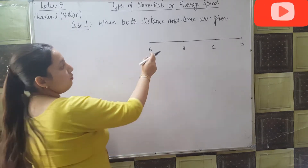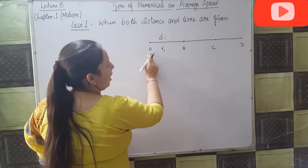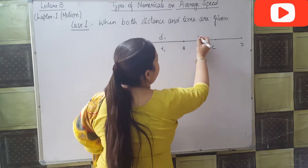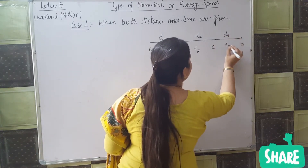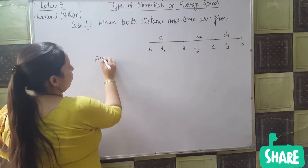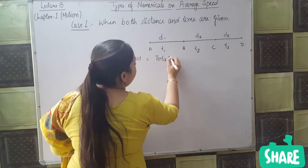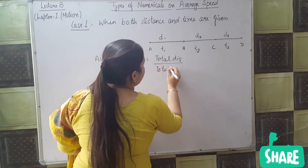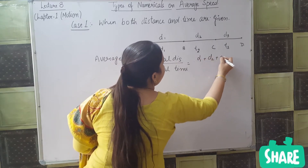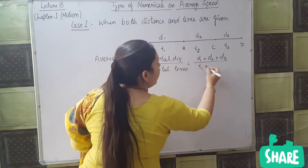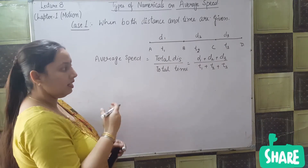Consider this example: if a body covers distance d1 in time t1 from A to B, from B to C it covers distance d2 in time t2, and it covers distance d3 in time t3. Then how will you find the average speed? Average speed equals total distance divided by total time, which is d1 plus d2 plus d3 divided by t1 plus t2 plus t3.